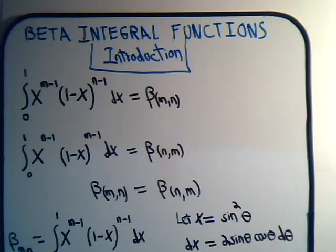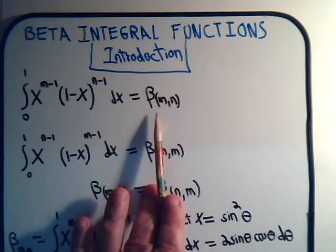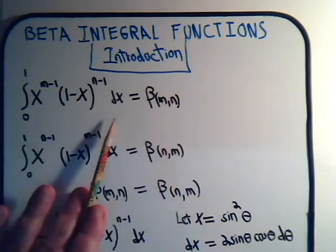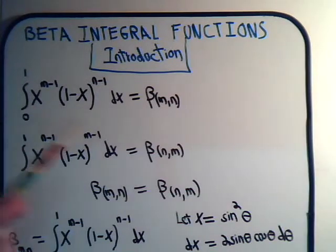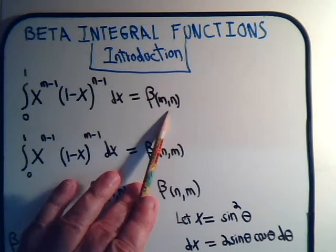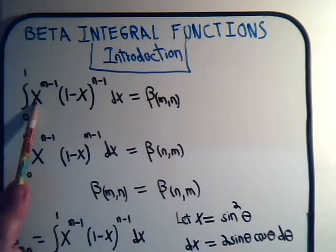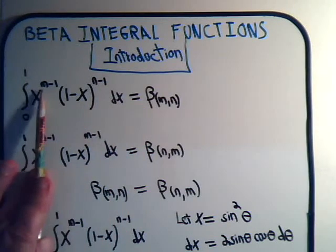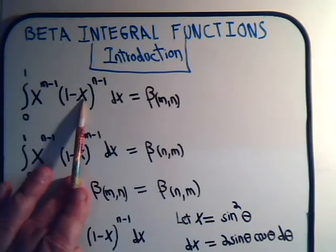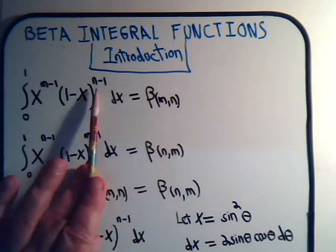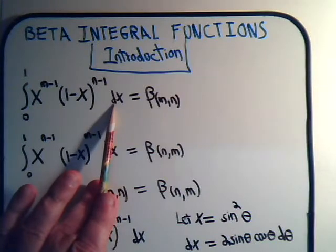The beta function of m,n is defined with this integral here, going from 0 to 1 on our limits. Beta of m,n means I would have x raised to the m minus 1 power, and then 1 minus x raised to the n minus 1 power, dx.